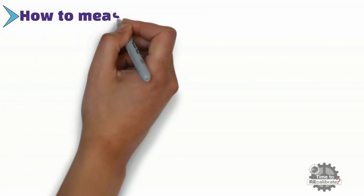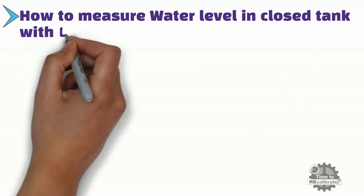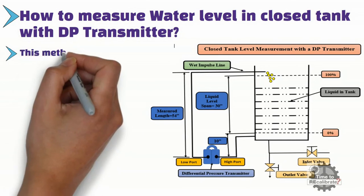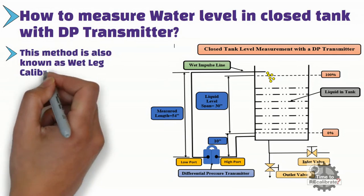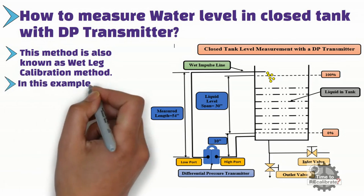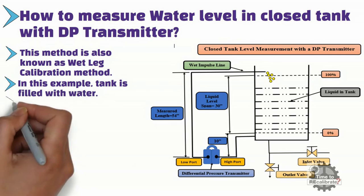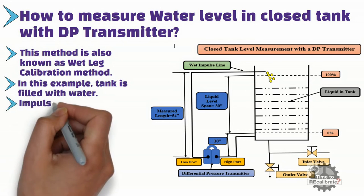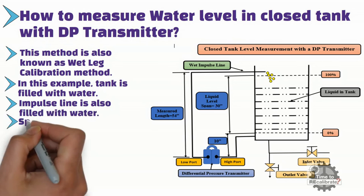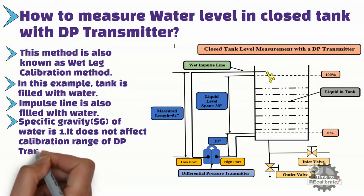How to measure water level in a closed tank with a differential pressure transmitter? This method of level measurement is also known as the wet leg calibration method. The specific gravity of process fluids plays a crucial role in calculation of the calibration range for a DP transmitter. In this example, let's assume that the tank is filled with water and the impulse line is also filled with water. Since the specific gravity of water is 1, it does not affect the calibration range.